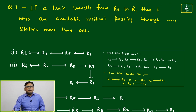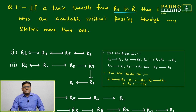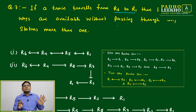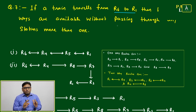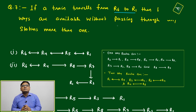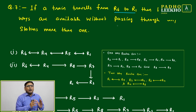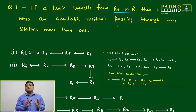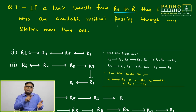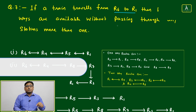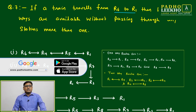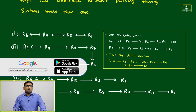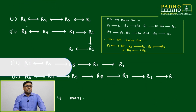Question number seven: if a train travels from R6 to R1, how many ways are available without passing through any station more than once? We must add this condition because without it, infinite routes exist — a train could loop endlessly without restriction.